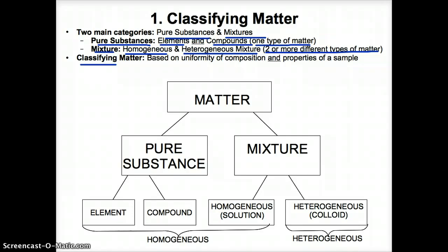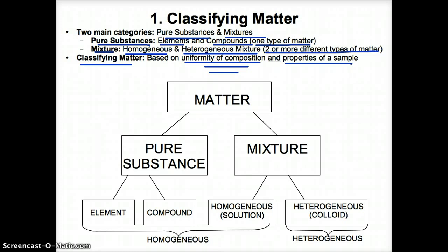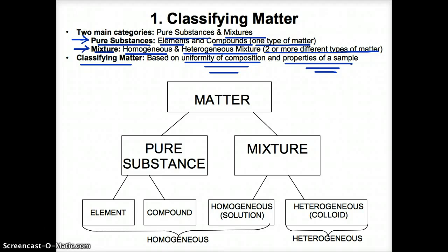How you classify matter is generally based on two factors. First, is the composition uniform? And secondly, the properties of the sample throughout the sample. If the composition is uniform and the properties are the same throughout, you usually have a substance. But if the composition is different throughout and you have different properties throughout, then it's usually a mixture.